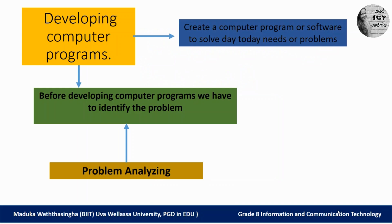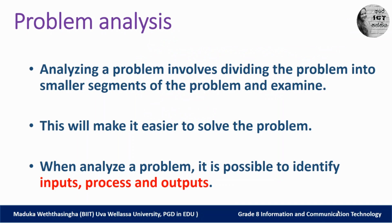To identify the problem, we have to do problem analysis — we have to analyze the problem and identify the requirements. Then we have to develop the program to satisfy the requirements. Analyzing the problem involves dividing the problem into smaller segments and examining them. The first part is to divide the complex problem into smaller segments. In grade 7, you learned a word for this: decomposing the problem. When you find a complex problem, you have to decompose it, which will make it easier to solve.